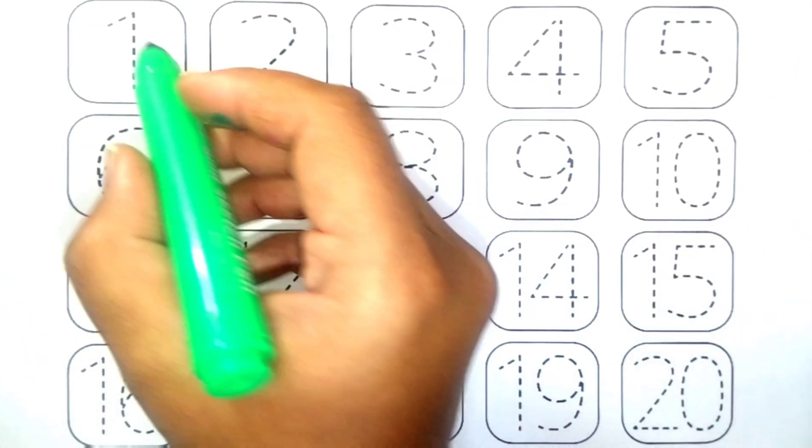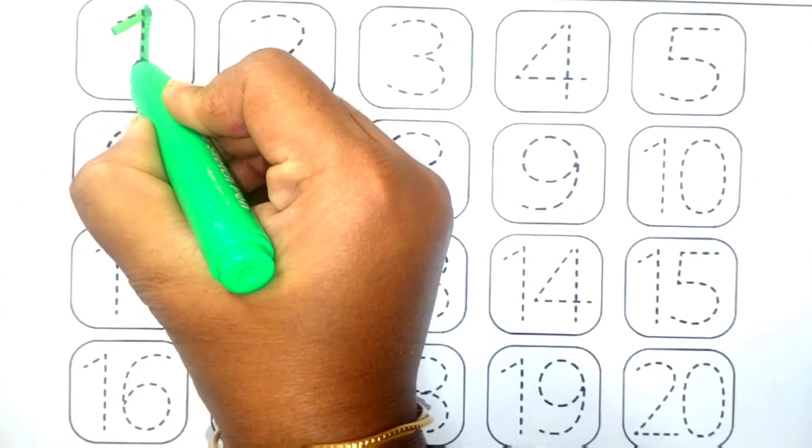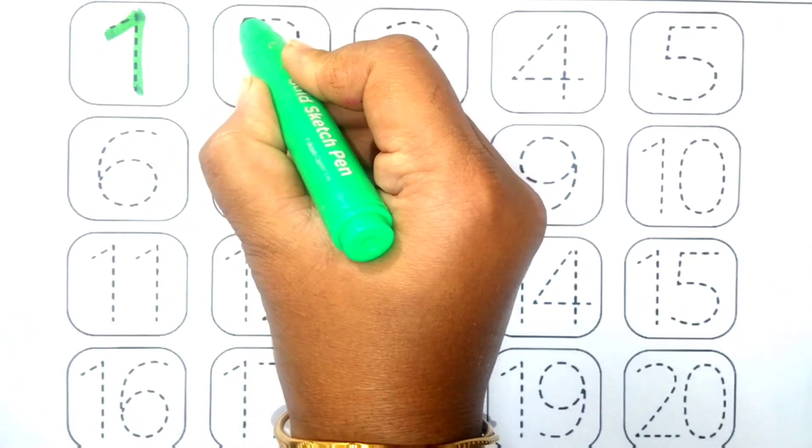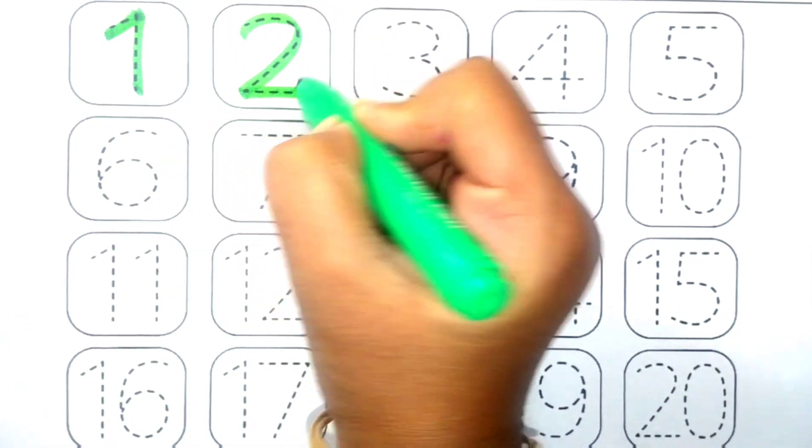Green color. 1. 1 means ek. 2. 2 means do.